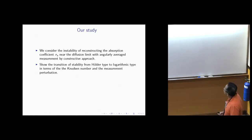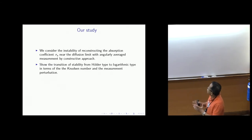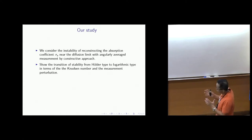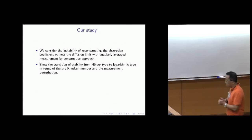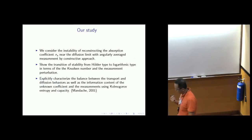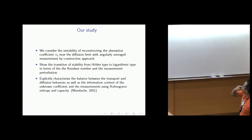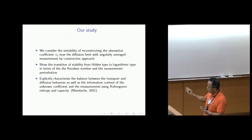We have a very particular description that explicitly shows the balance: as the mean free path goes to zero or scattering becomes more and more dominant, the stability transitions from Hölder type — where you only lose some derivatives, a polynomial kind of instability — to logarithmic type of instability.